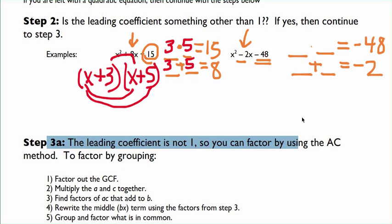If you need to do some guessing and checking, some trial and error on your calculator, you can do that. But I see negative 48, one number will have to be negative and one will have to be positive. Since what they're adding to is negative, the bigger number will be negative.